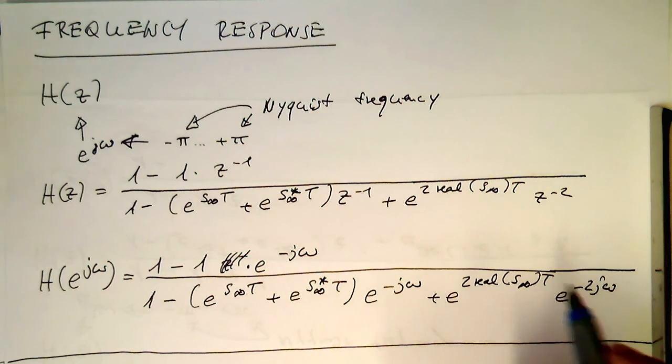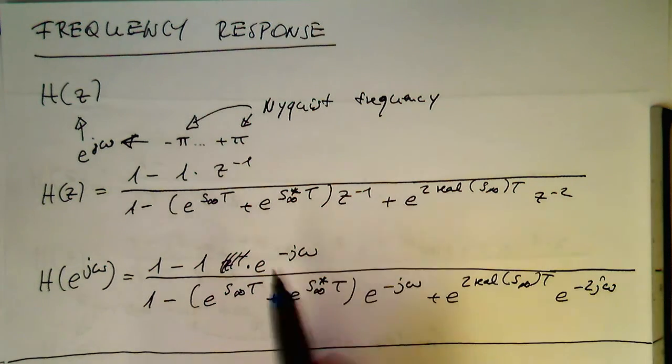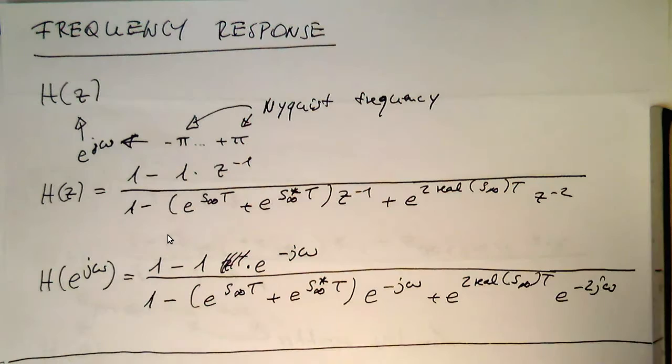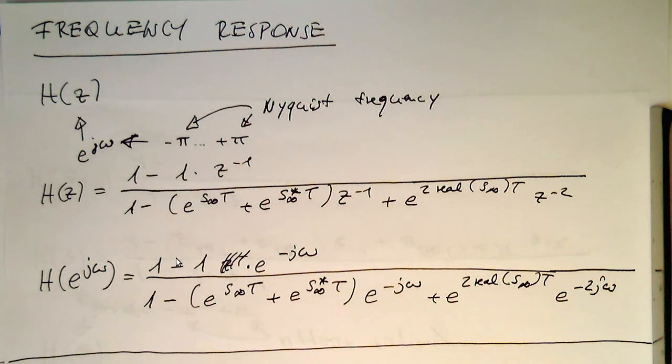So, we see the idea is very simple. So, we are substituting the e to minus j omega here instead of the Z to minus 1.